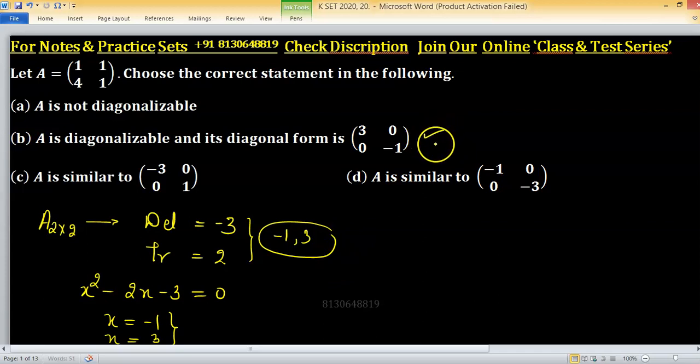Option B is correct. If two matrices are similar, then its determinant and trace will be same.